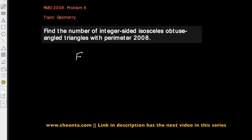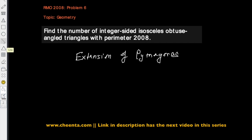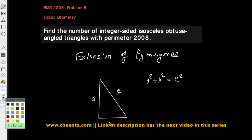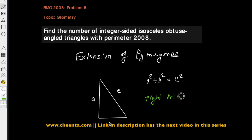Let's talk about an extension of Pythagoras' theorem. We know the general statement: if we have a right angle triangle where the legs are a and b and the hypotenuse is c, then Pythagoras' theorem gives us that well-known relation. It's a very interesting theorem with many proofs. The problem is that this theorem holds only for right triangles, so we want to extend it.